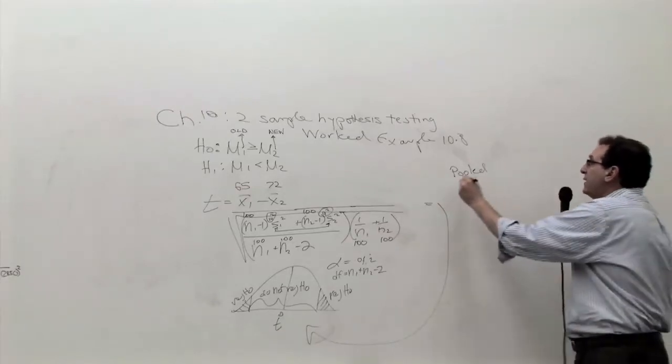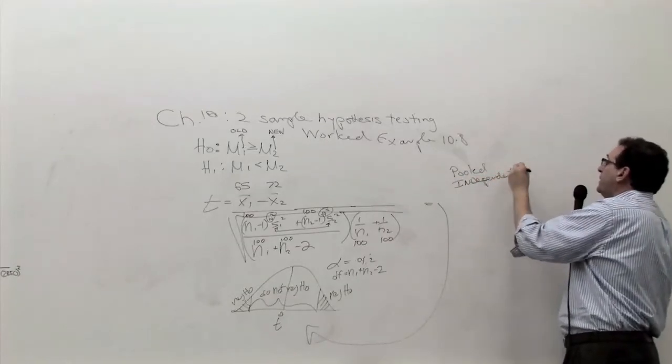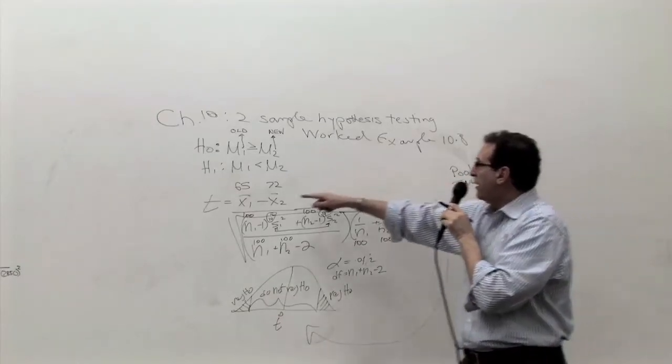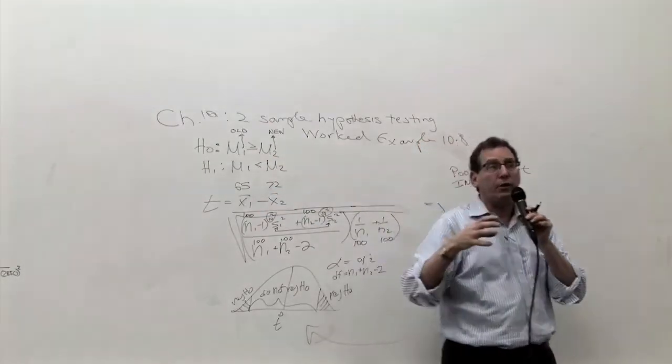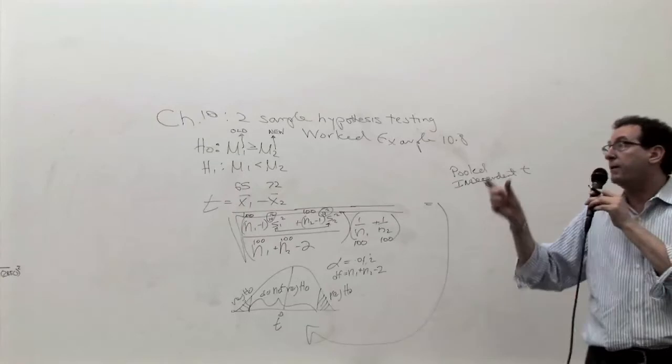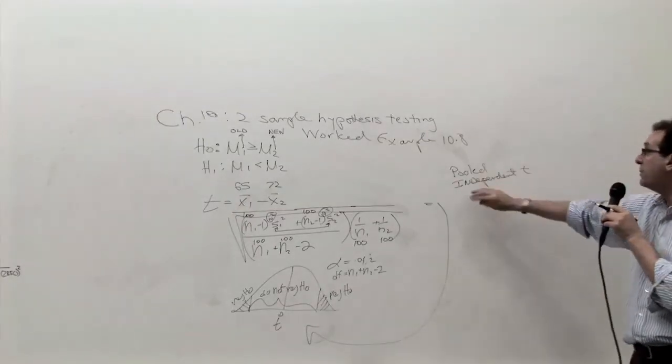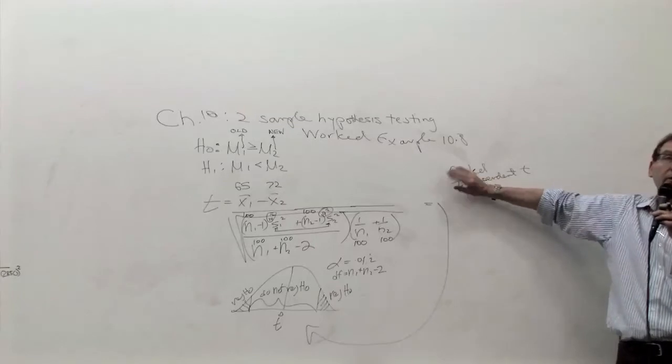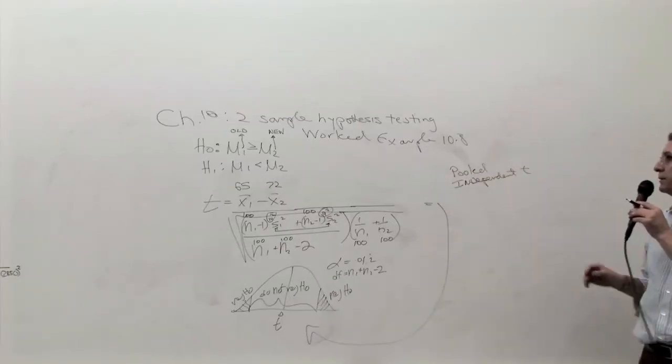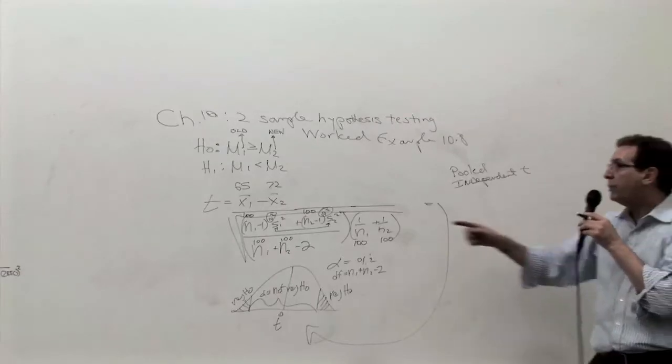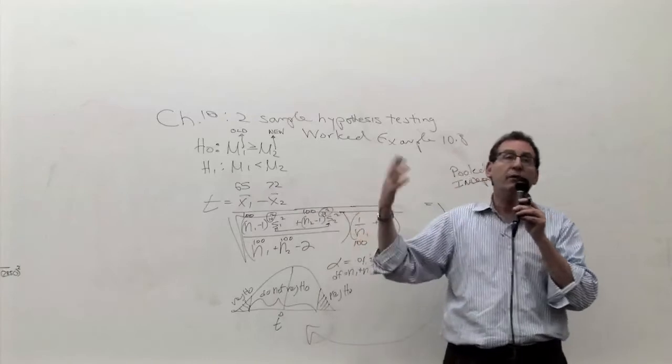And secondly, this is called the independent T because these two samples of 100 and 100 had nothing to do with each other, as opposed to the situation where you might pick, for example, 100 couples, husband and wife. That will be called dependent. One depends upon the other. They match together. They're paired together. That's called the paired T test. This is the independent T test.